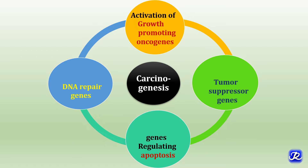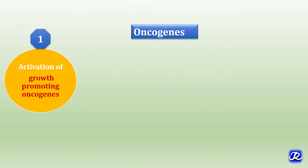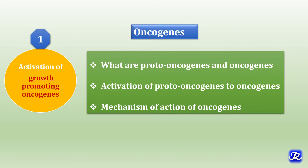The important mechanisms of carcinogenesis are: activation of growth promoting oncogenes, inactivation of tumor suppressor genes, alteration in genes regulating apoptosis, and defective DNA repair genes. Let's begin with the first mechanism — activation of growth promoting oncogenes — by first understanding what oncogenes and proto-oncogenes are.